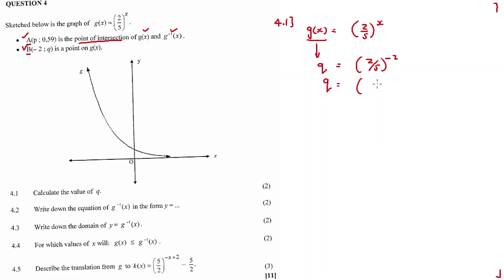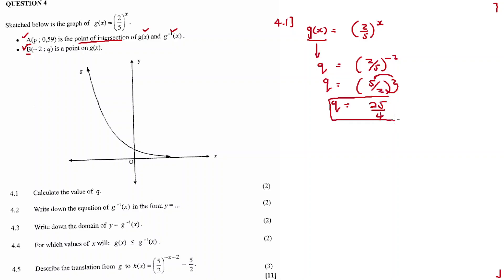I substitute: then I have (2/5) raised to exponent negative 2. So to solve this — it's positive 2 — (5/2) raised to exponent 2. That's going to be 25 over 4. So you punch a calculator and you should get 25 over 4.